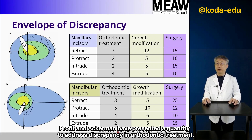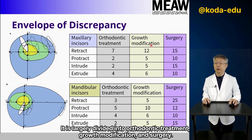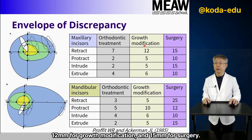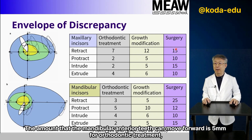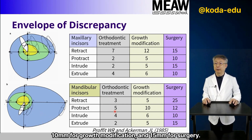Proffitt and Ackerman have presented quantities to address discrepancy in orthodontic treatment, divided into orthodontic treatment, growth modification, and surgery. The maxillary anterior teeth can be moved posteriorly 7 mm with orthodontic treatment, 12 mm with growth modification, and 15 mm with surgery. The mandibular anterior teeth can move forward 5 mm with orthodontic treatment, 10 mm with growth modification, and 15 mm with surgery.